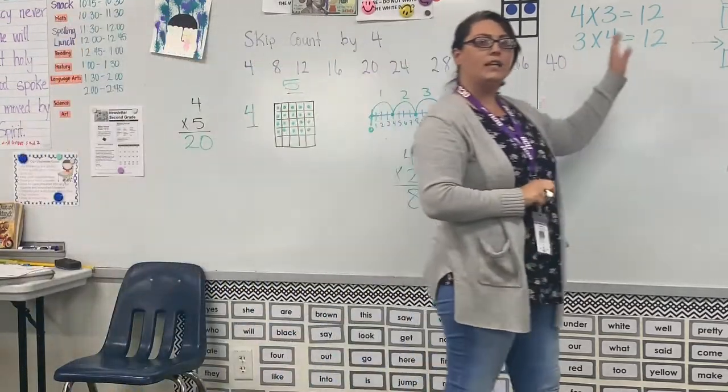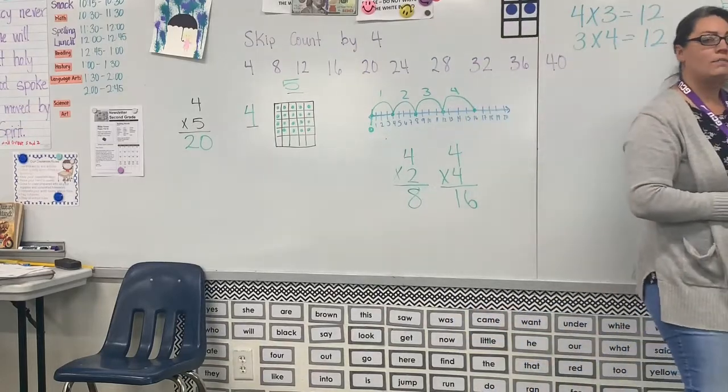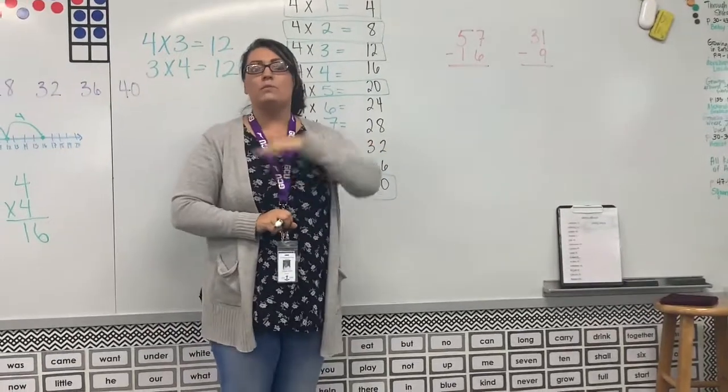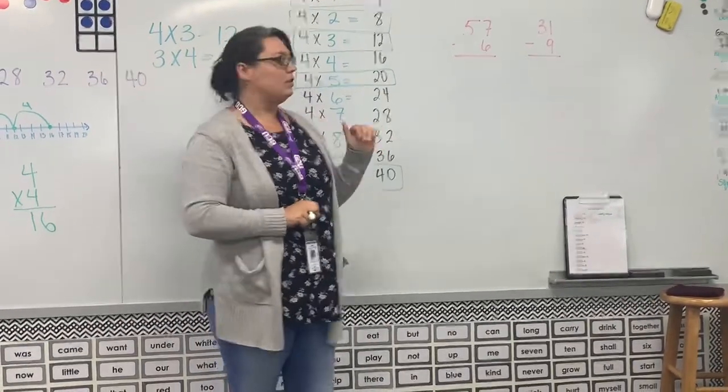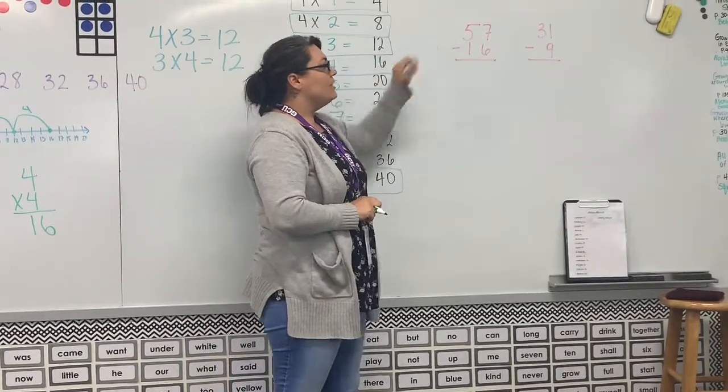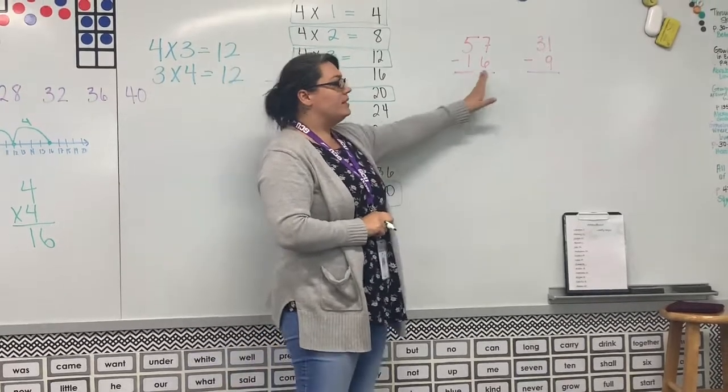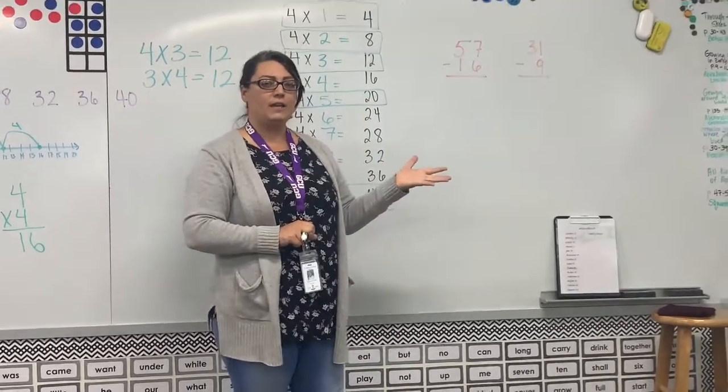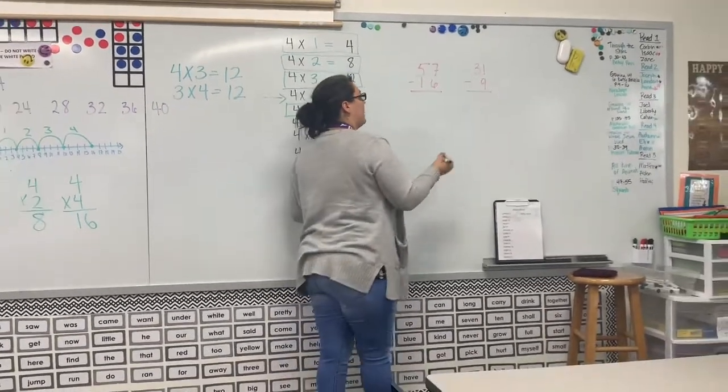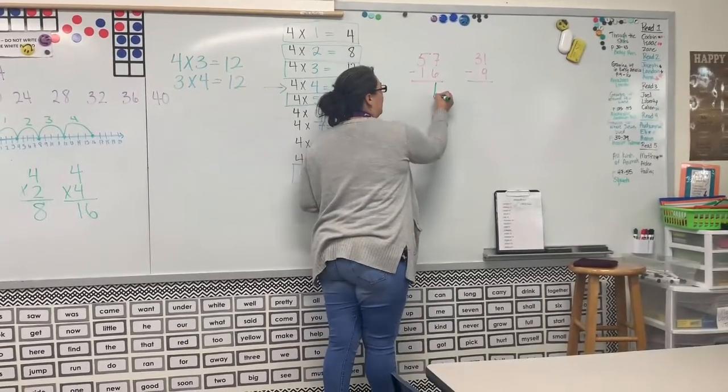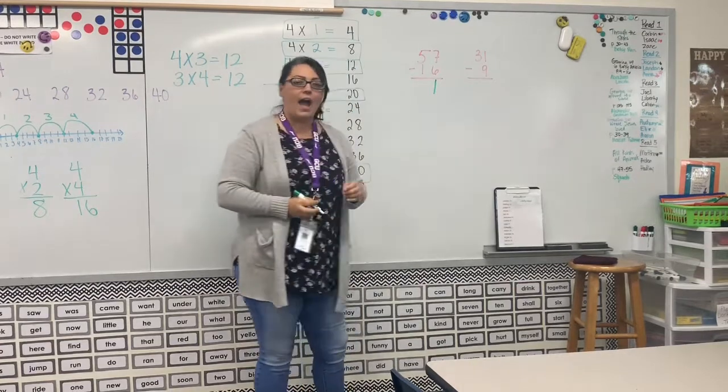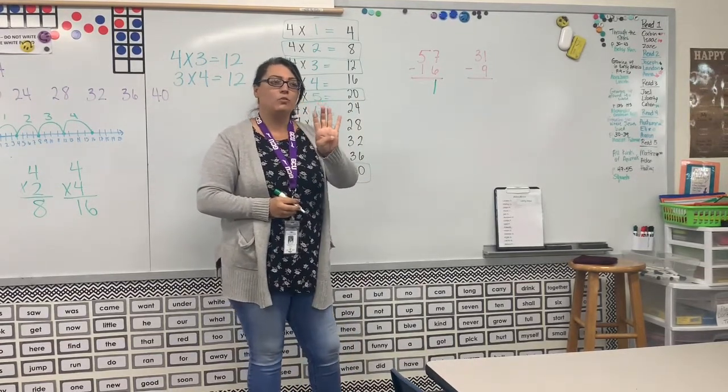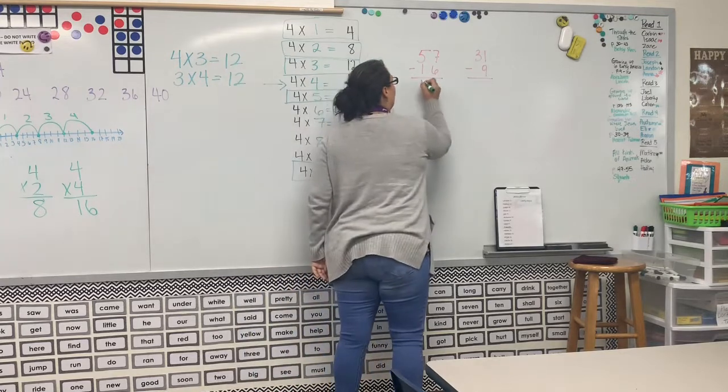Let's come over here and we are going to talk about subtraction. This is just review. It will be at the bottom of your page, but we're going to review a little bit. 57 - 16. Seven take away six. Can we do it? Yes, we can. If I have seven, I can take six away and I will have one left. Five take one away. If I have five and I subtract one, I will have four left.